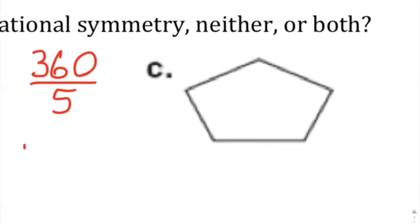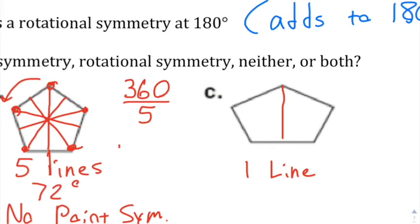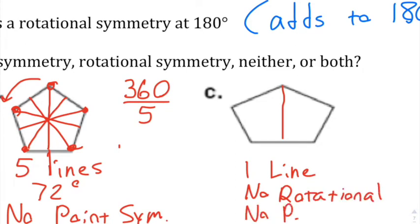This pentagon-like shape is kind of flattened — you could say it's a vertical compression. It has only one line of symmetry. Since it's flattened, you're not going to have any rotational symmetry, which therefore means no point symmetry either.